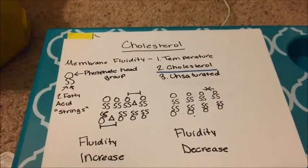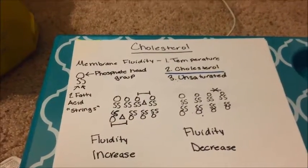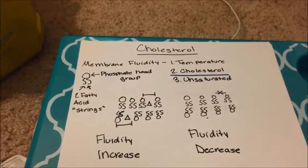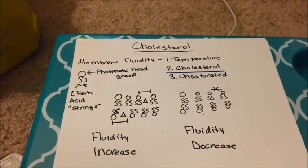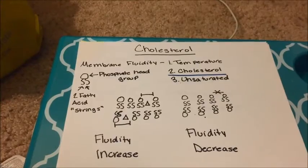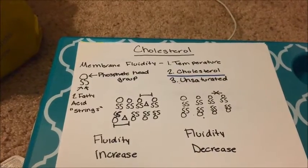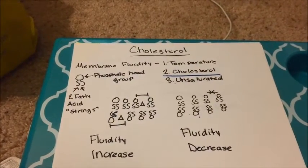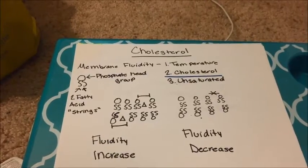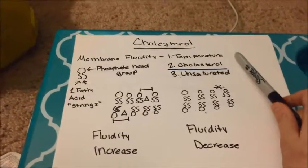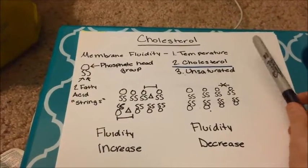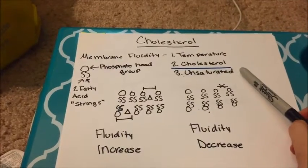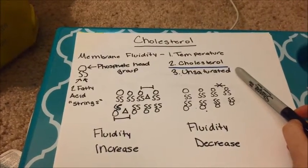Now we've talked about cholesterol before, and when we talked about cholesterol we were talking about membrane fluidity. Membrane fluidity is basically why the membrane sticks together and why our cells don't fall apart. The three important parts we talked about when it comes to fluidity are high and low temperatures, the presence of cholesterol, or having saturated or unsaturated fatty acids.